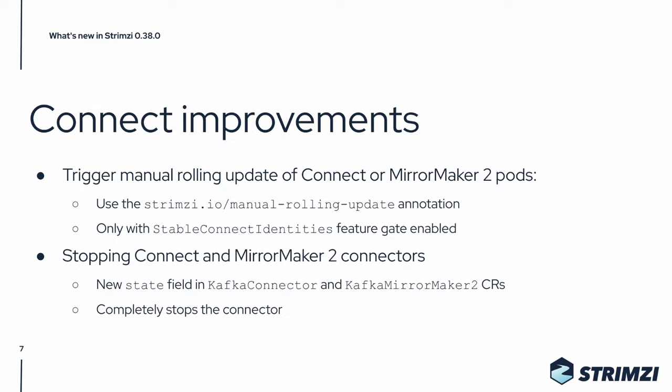We also have some improvements to our Kafka Connect and Kafka Mirror Maker 2 support. When we introduced the Stable Connect Identities feature gate and started using Strimzi pod sets to run the Connect and Mirror Maker 2 clusters, we didn't give our users any easy way to roll all the pods belonging to the cluster. Now in Strimzi 0.38 we add support for the Manual Rolling Update annotation. You can use it to roll all pods belonging to a Connect or Mirror Maker 2 cluster. This is the same annotation that you can already use to roll the Zookeeper cluster or the Kafka brokers, and it works the same way for Connect and Mirror Maker 2.